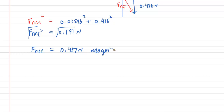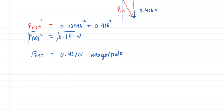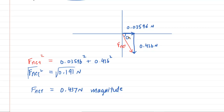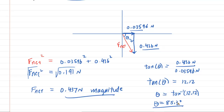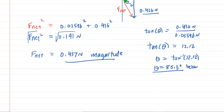That's the magnitude of the net force. For the direction, we call the angle theta. The tangent of theta equals the opposite side (0.436) divided by the adjacent side (0.03596), giving about 12.12. Taking the inverse tangent of 12.12 gives theta ≈ 85.3 degrees. So the force is 85.3 degrees below the positive x-axis.